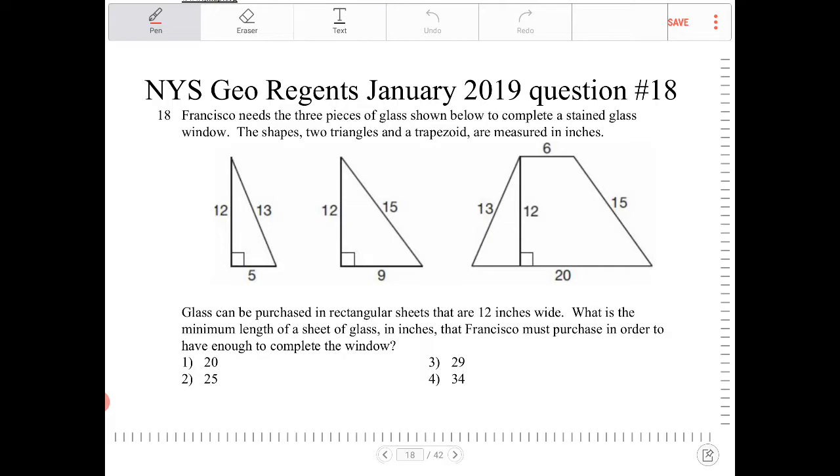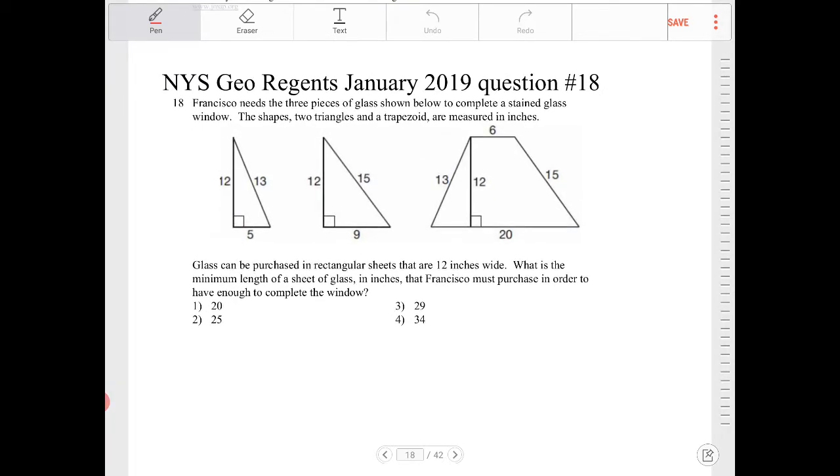So the strategy to determine the amount of glass necessary to create, to construct these three pieces of stained glass, is to consider their surface area.